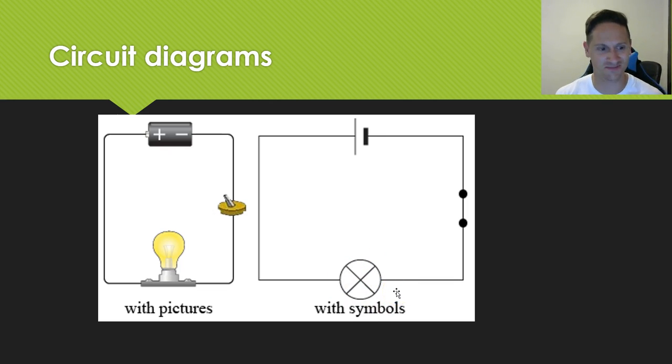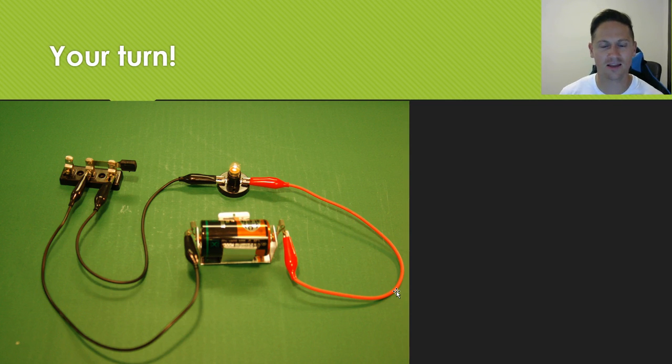So now it's your turn. In your books, I'd like you to try to represent this simple circuit with a circuit diagram. Now to draw a circuit diagram, you need to use pencil, and you need to use a ruler, because it needs to be nice and neat, just like the previous example.